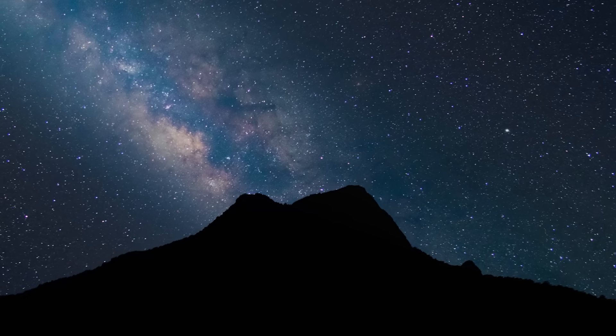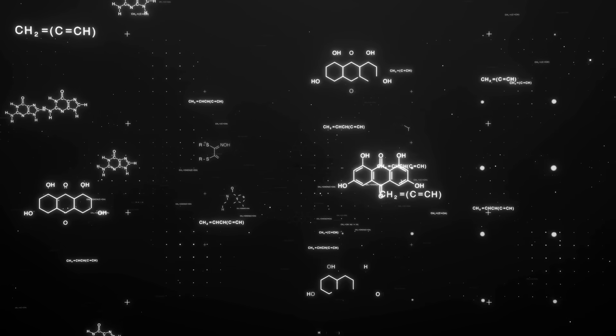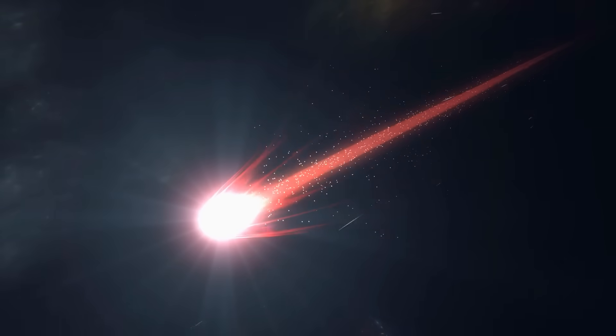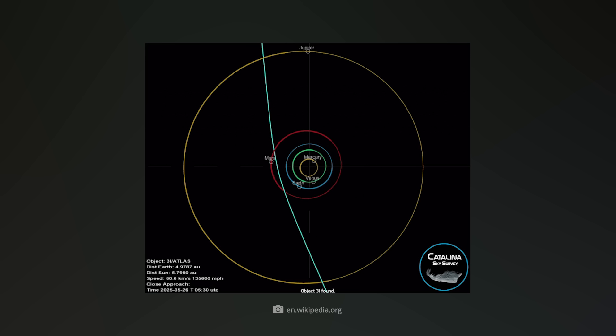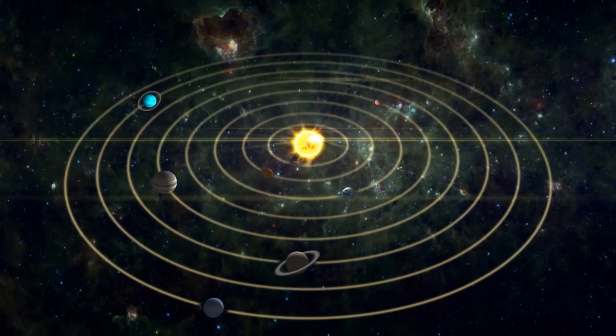It came out of the darkness between the stars and is faster, bigger, and chemically stranger than anything we've seen before. 3i Atlas is moving at a speed of almost 57 kilometers per second and racing along a trajectory that lies exactly in the ecliptic, the plane in which the planets move around the Sun.